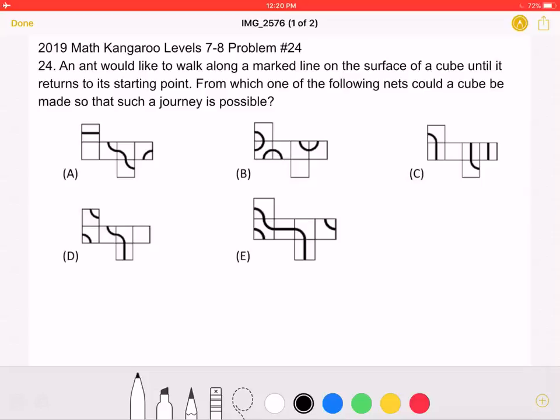This is the 2019 Math Kangaroo, Level 7-8, Problem Number 24. An ant would like to walk along a marked line on the surface of a cube until it returns to its starting point. From which one of the following nets could a cube be made so that such a journey is possible?